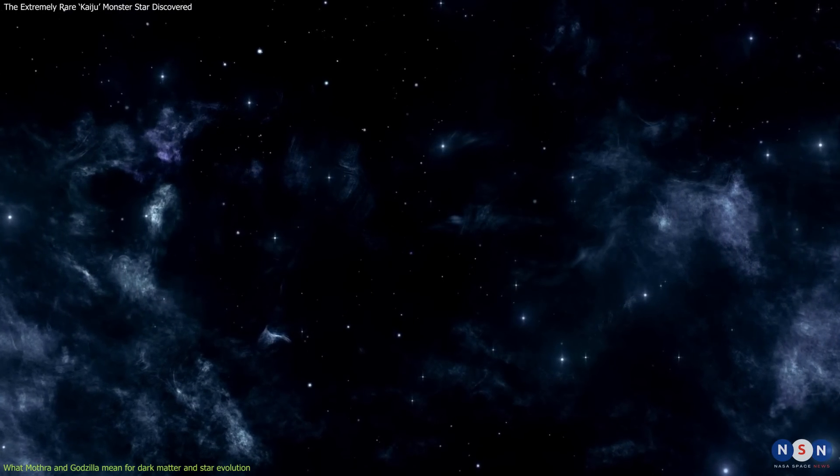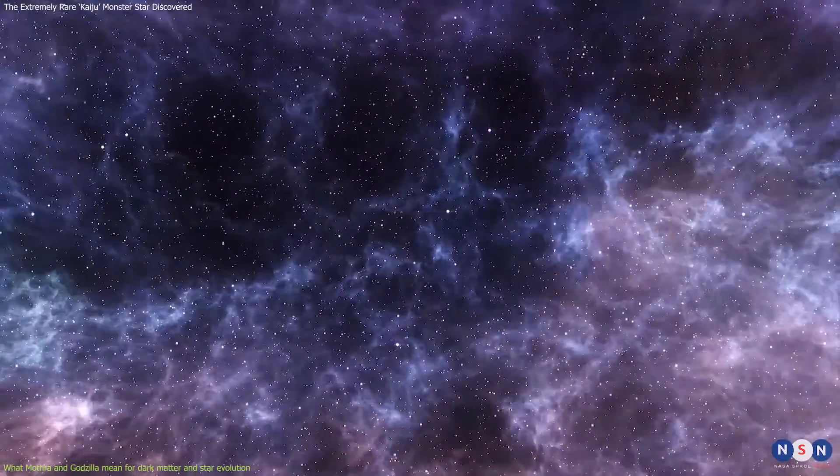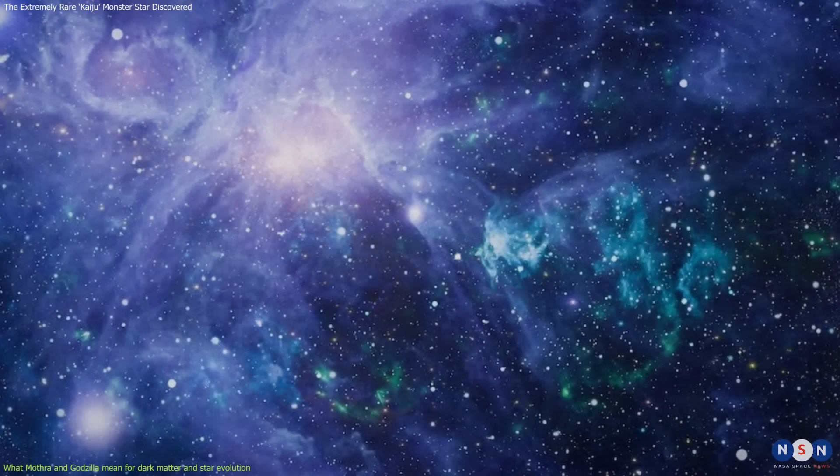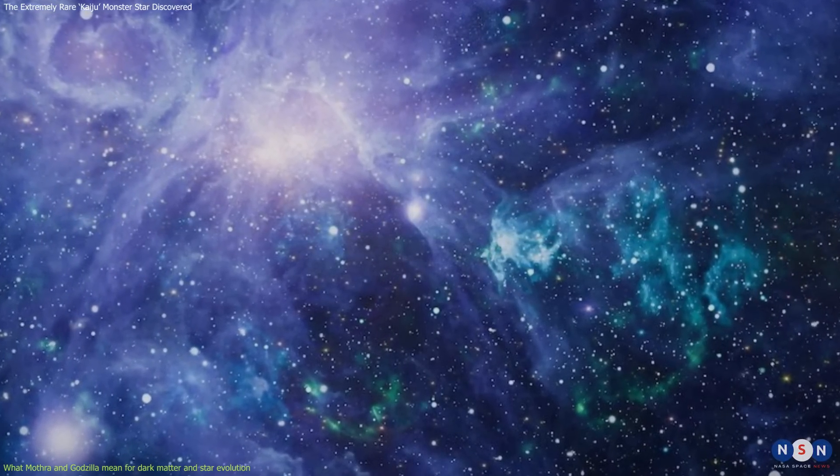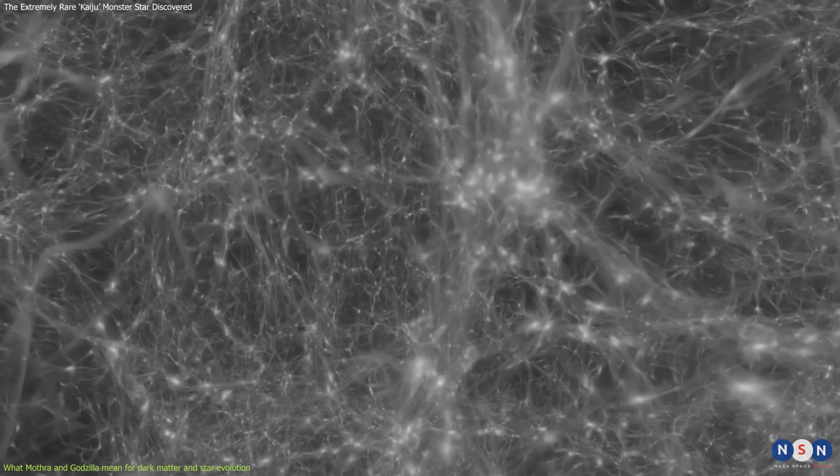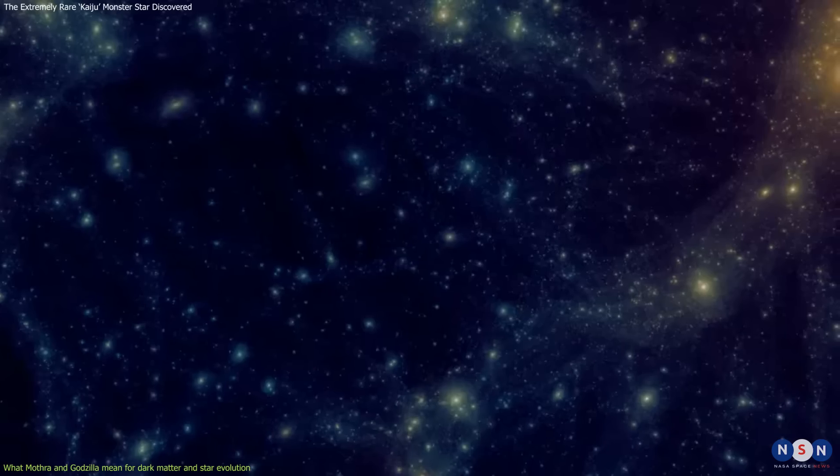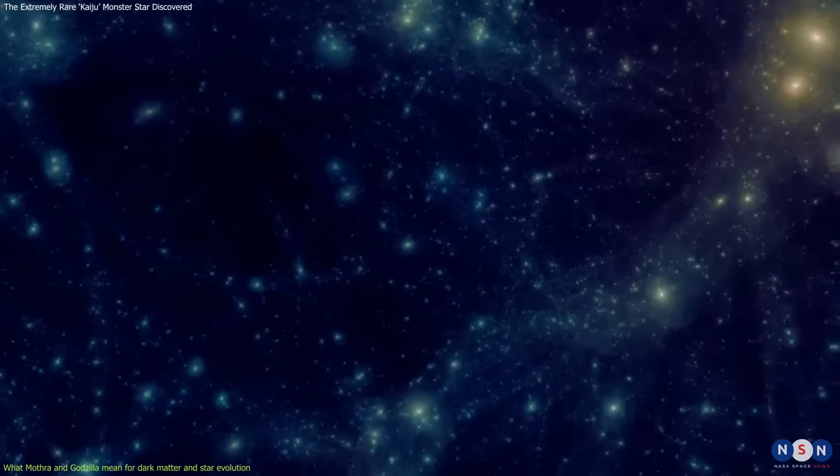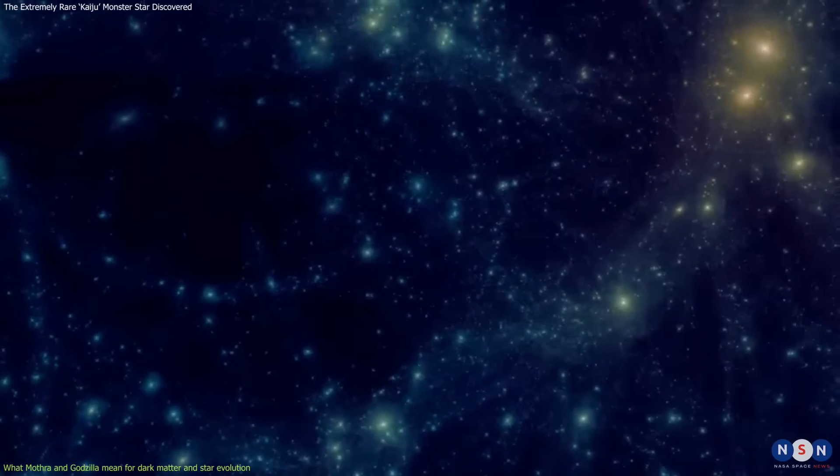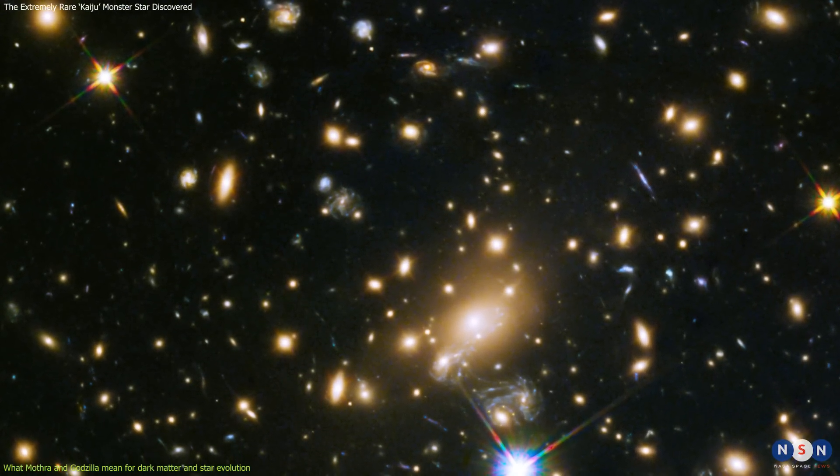Dark matter is one of the biggest puzzles in modern physics. Dark matter makes up about 85% of the matter in the universe, but we still don't know what it is made of or how it behaves. By studying how dark matter affects the light from these stars, astronomers can test different theories and models of dark matter and constrain its properties and distribution.